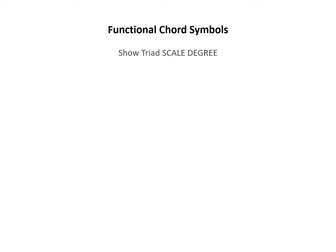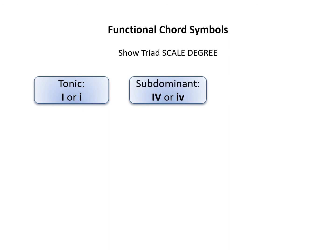Functional chord symbols written below chords use Roman numerals to show the scale degree on which the triad is built. Uppercase is used for major triads and lowercase is used for minor. Here are functional chord symbols for the tonic triad, subdominant triad, and dominant triad.